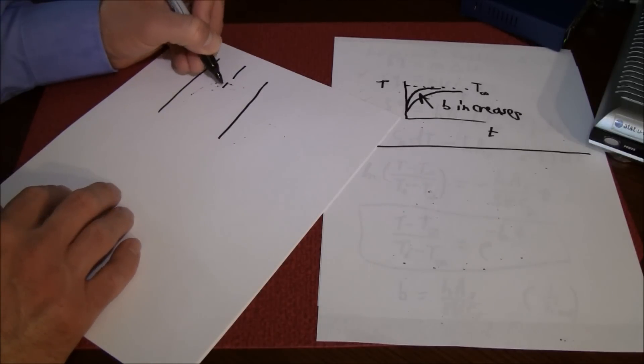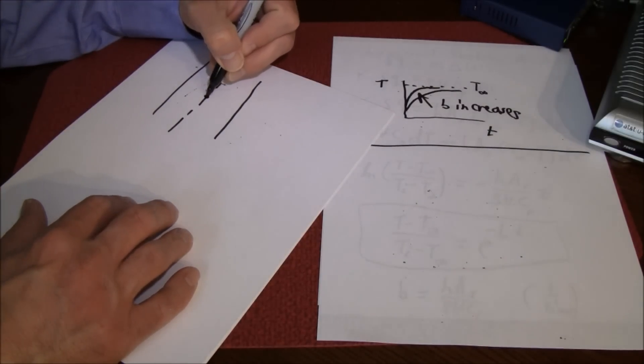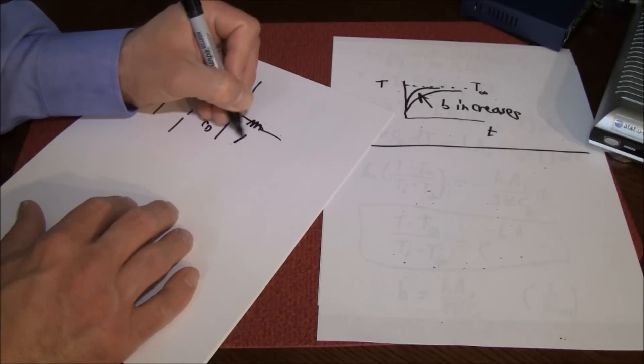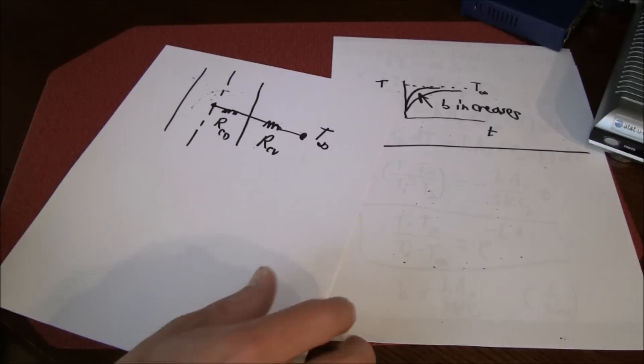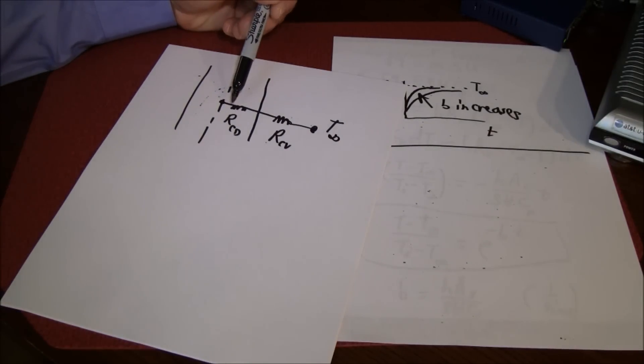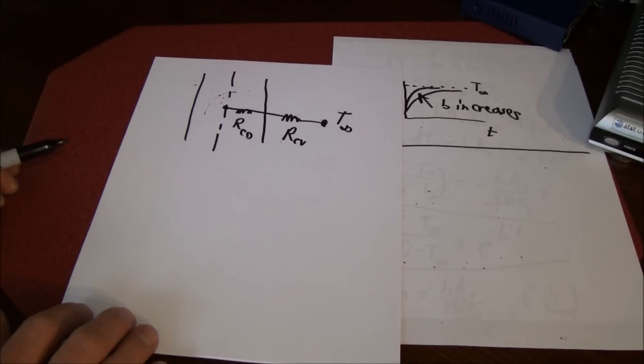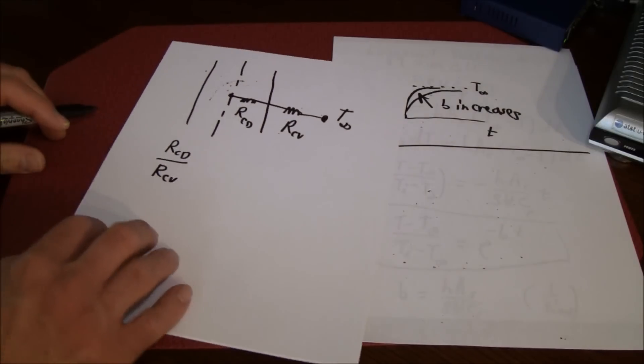We would have a resistance here due to conduction and a resistance here due to convection. This must be T infinity out here. Notice if the resistance due to conduction is much lower than the resistance due to convection, then the temperature drop across this wall here is going to be very small. In other words, the problem is pretty much going to be uniform. So let's look at this ratio: the resistance due to conduction divided by the resistance due to convection.